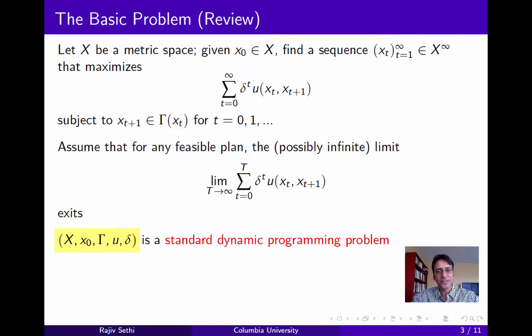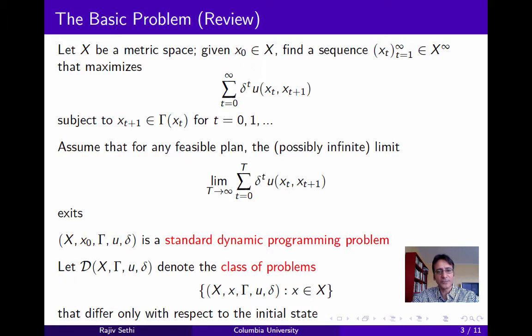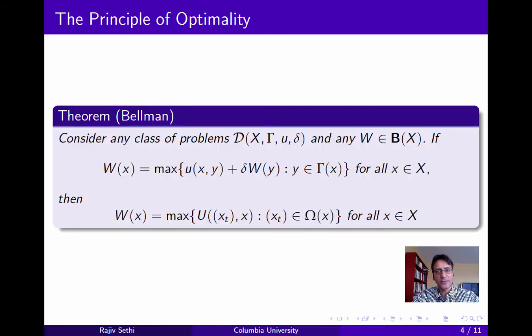Then the 5-tuple consisting of the metric space, the initial state, the transition correspondence, the one-period return function, and the discount factor is known as the standard dynamic programming problem. And we can define a class of problems which differ only with respect to their initial state. And you notice that as you move from one state to the next, you are moving within this class of problems. And the goal is to characterize the solution to the entire class of problems.